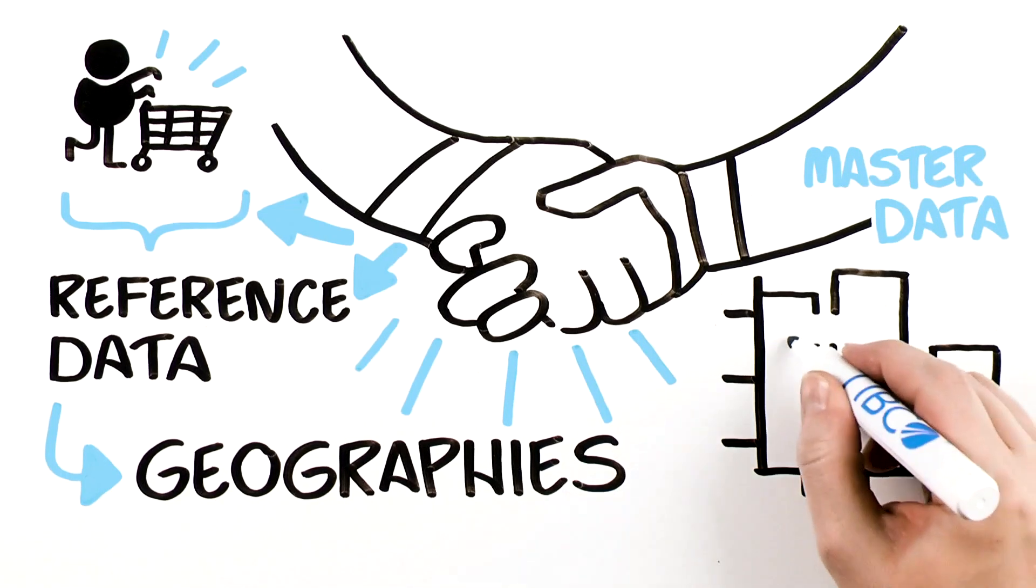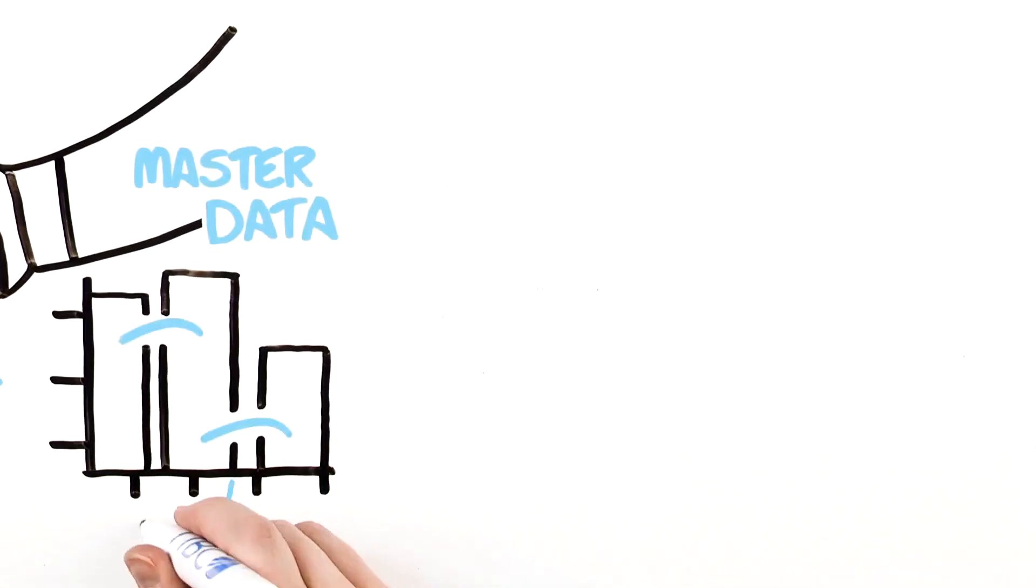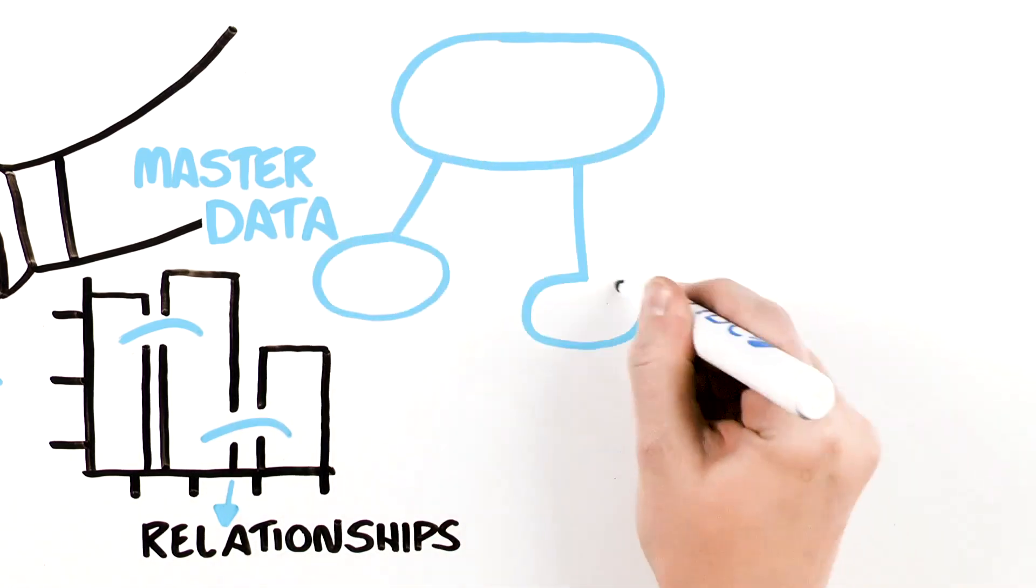Naturally, tying these three big blocks of data, product, customer, and reference data together forms relationships. That's how we get a web of connections or network graph.